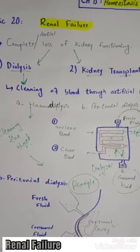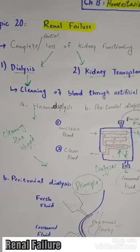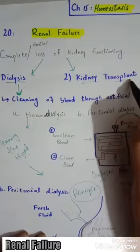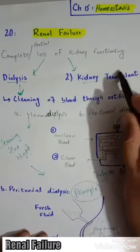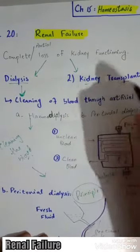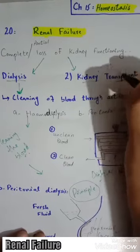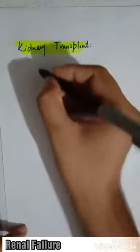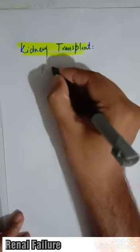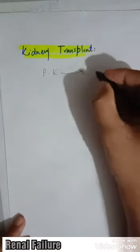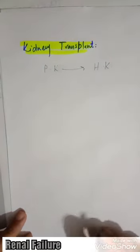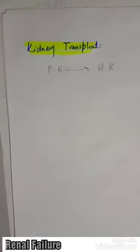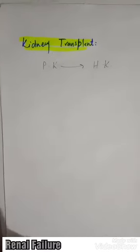Both dialysis types are temporary processes and are not a permanent solution for renal failure. The permanent solution of renal failure is a kidney transplant, in which the patient's damaged kidney is replaced with a healthy kidney. There are two main cures of renal failure: dialysis and kidney transplant.